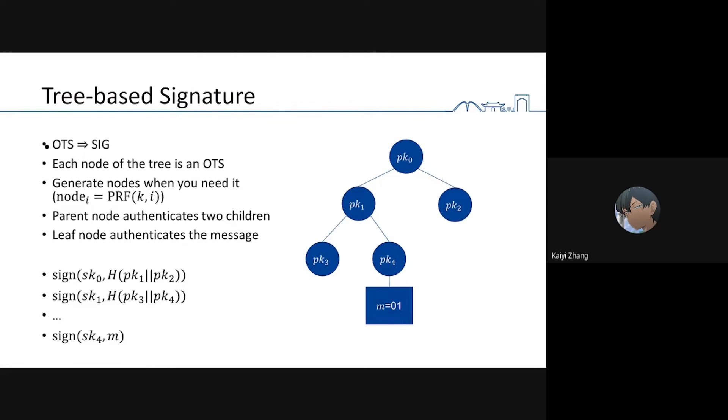One-time signature can sign only once. If you want to get normal signature, which means we can sign multiple messages, there is a tree-based signature paradigm. Suppose you have a large binary tree, and each node of the tree is a one-time signature. We have a PRNG to generate nodes when we need them. To sign a message, for example 0, 1, we pick the path from the leaf node to the root node. For each node in the path, we let the parent node sign its two children, and the leaf node signs the message.